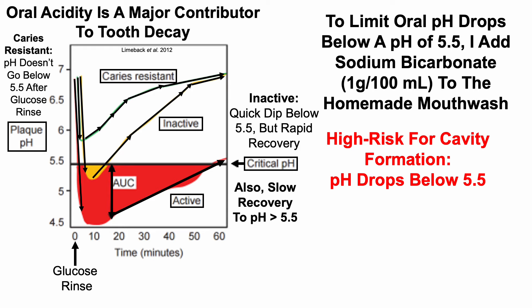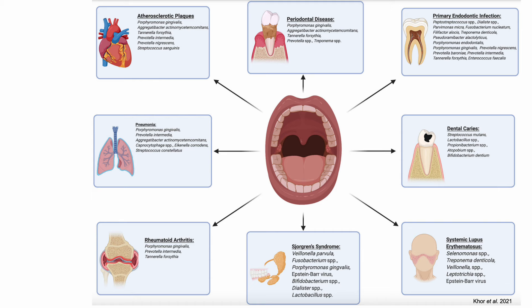To limit oral pH drops below 5.5, I add sodium bicarbonate — a base — to alkalinize my mouth. I use 1 gram of sodium bicarbonate per 100 milliliters of water. The salt concentration of blood is 0.9%, so this 1% sodium bicarbonate solution is essentially close to isotonic with plasma. This is also included in the homemade mouthwash.